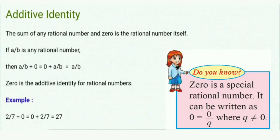Additive identity. The sum of any rational number and 0 is the rational number itself. If a upon b is any rational number, then a upon b plus 0 equals a upon b. And 0 is the additive identity for rational numbers.